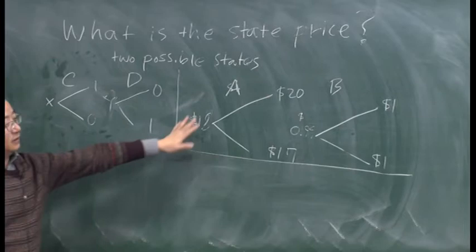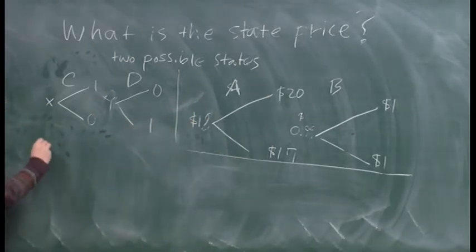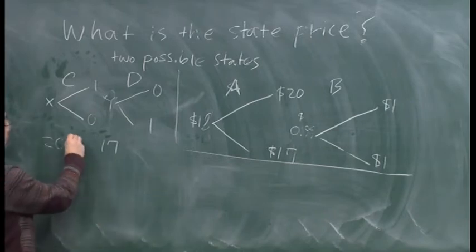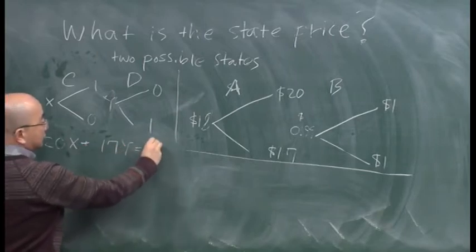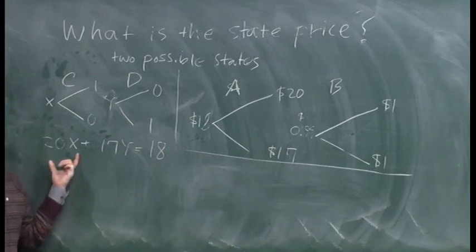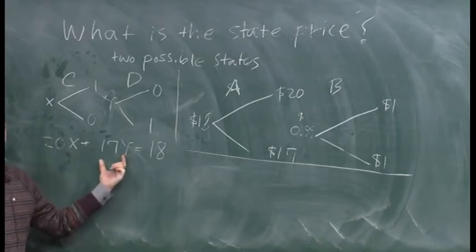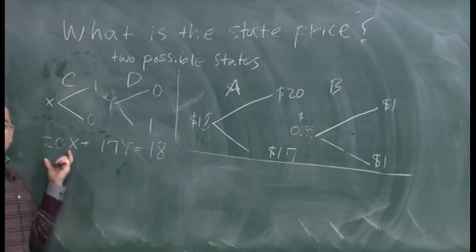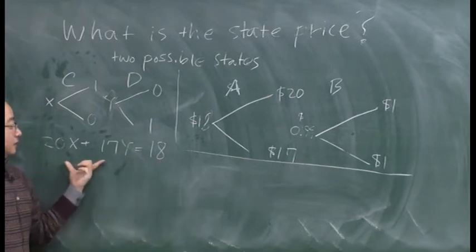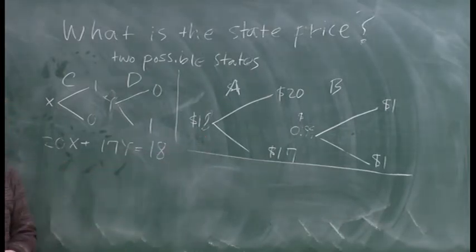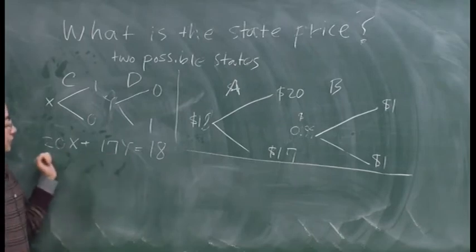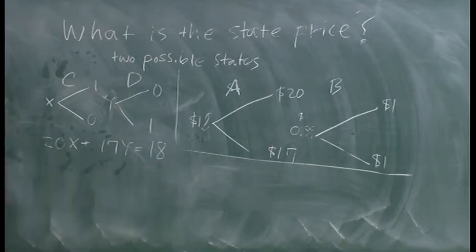So if you call this current price, we don't know what, but let's call this X, let's call this Y. Then what's the relationship between X and Y and the other numbers? For asset A, if you buy 20 of asset C and 17 of asset D, you will get an asset that looks exactly like asset A. So that means 20X plus 17Y should be exactly 18. So this is the price that you need to pay to buy 20 units of asset C. This is how much you need to pay to buy 17 units of asset D. If you buy 20 units of asset C and 17 units of asset D, this portfolio will give you exactly the same payoff as asset A. So the cost of creating this portfolio should be exactly the same as buying asset A.